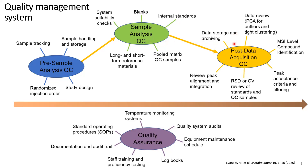After data acquisition, there could be something about data storage and archiving — it's a very good idea to have that in place. How are you going to do the data review? Are there extra persons looking into the data and getting the same results? Maybe you're using a PCA or checking for outliers. There are descriptions about how to annotate and identify metabolites, and acceptance criteria for filtering. You may also review QC samples — if there's high variation in a certain metabolite, you might reject it because it's only present in very few samples or has very high variation between injections.